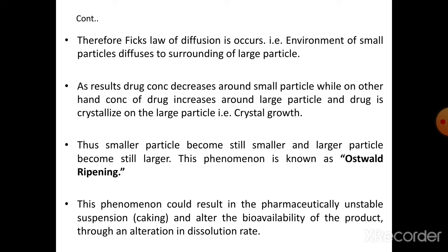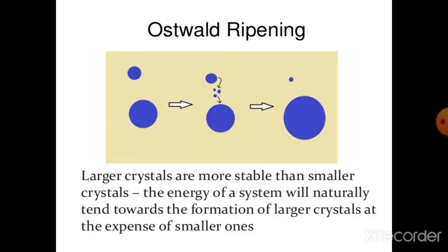Ostwald ripening could result in a pharmaceutically unstable suspension and alter the bioavailability of the product by altering the dissolution rate. If particle size is greater, it takes too much time to dissolve — there is an alteration in dissolution rate because particle size is larger due to Ostwald ripening. The ideal particle size of 0.5 to 5 microns is needed for a stable suspension; if particle size is greater, there is a total alteration in dissolution as well as bioavailability, making the product totally unstable.